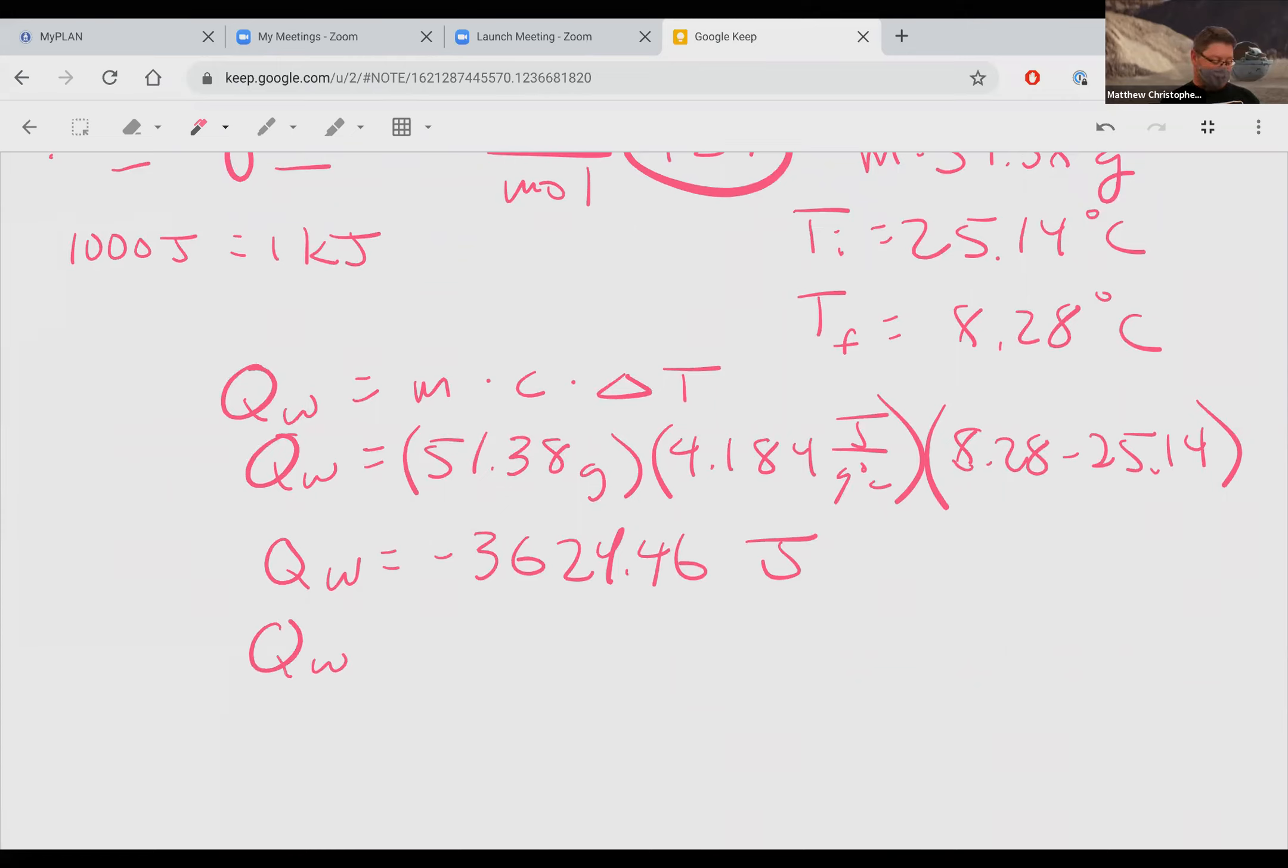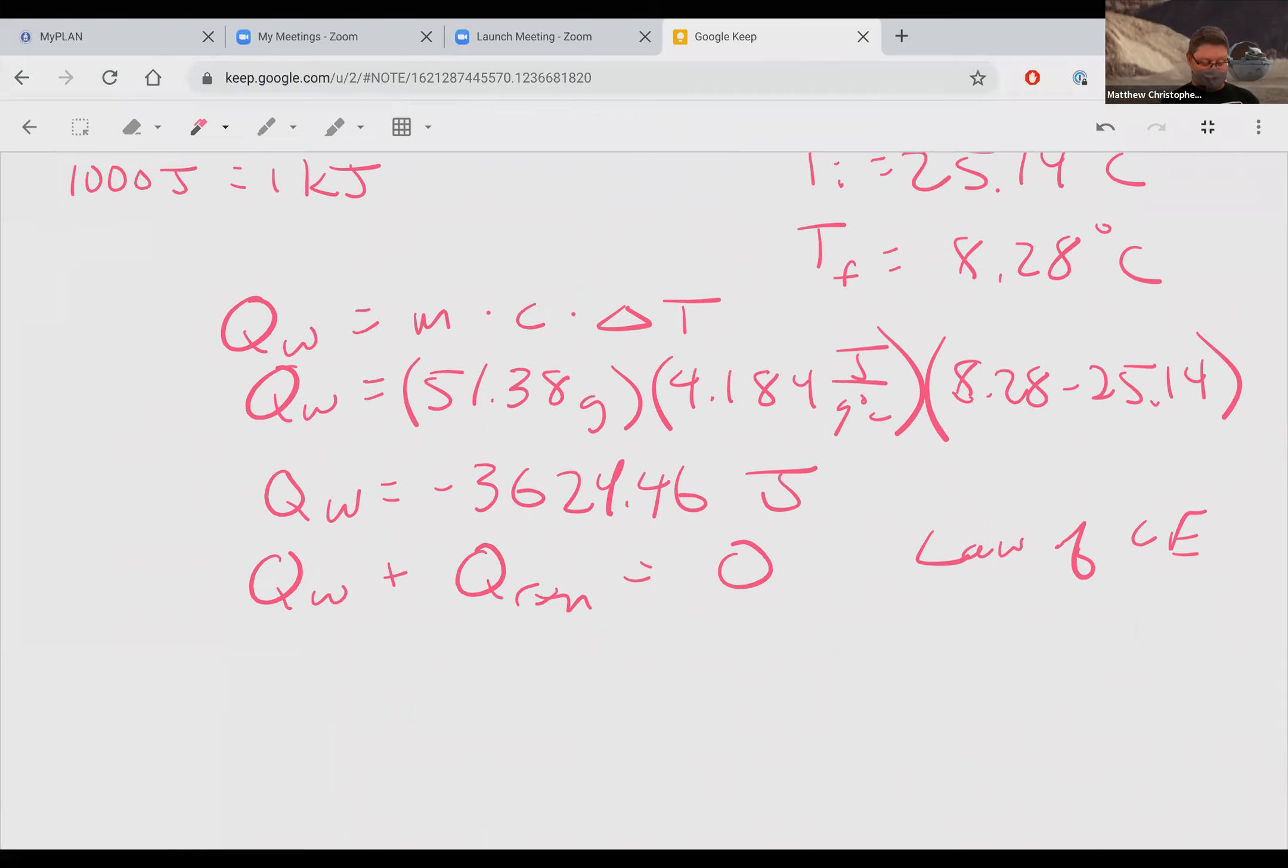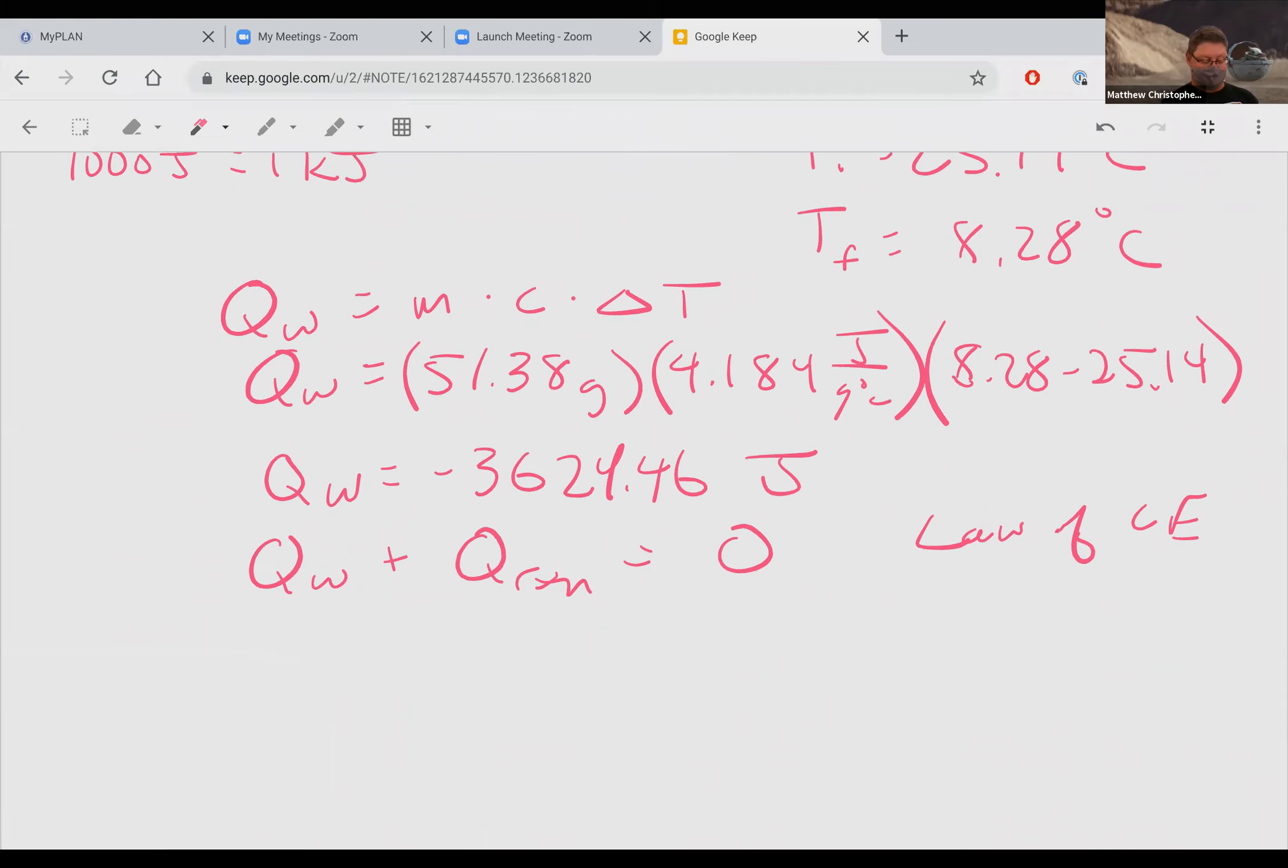And we know that the Q for the water plus the Q for the reaction will add up to zero. This is because of the law of conservation of energy. So if the Q for the water is negative 3,624.46, the Q for the reaction is positive 3,624.46 joules. That's the amount of energy that's given off in the reaction. They give it a special name, they call it the heat of the reaction.